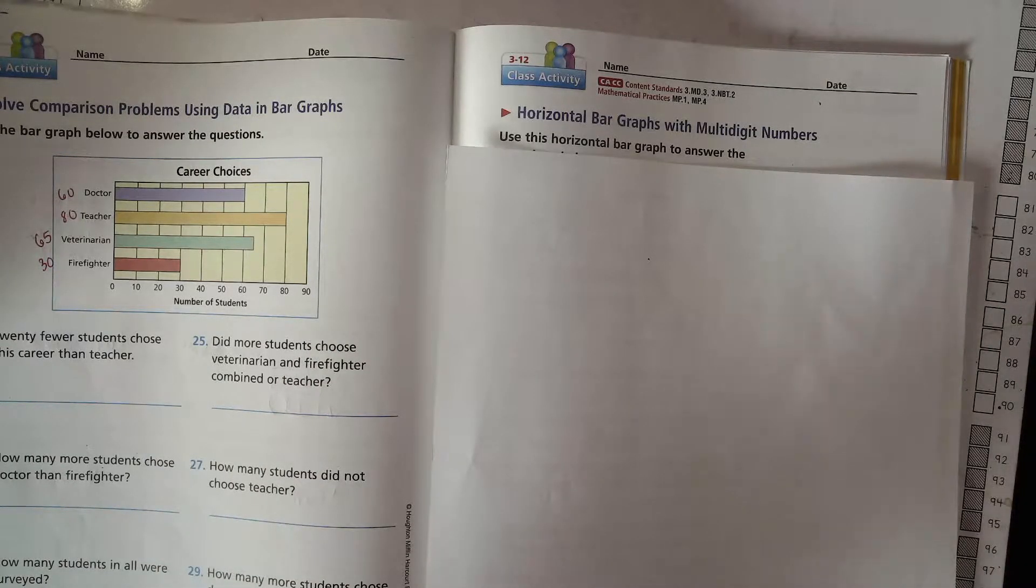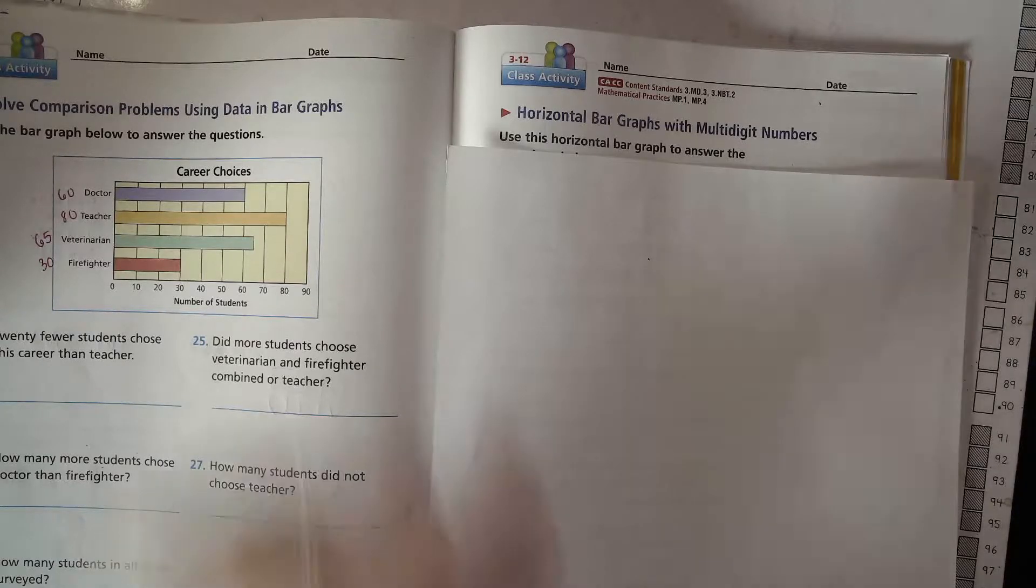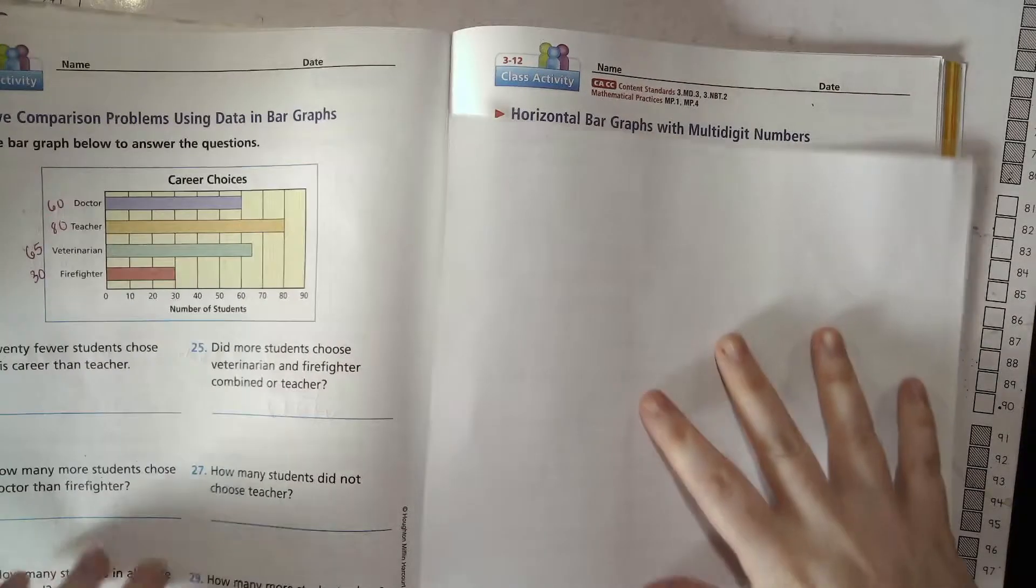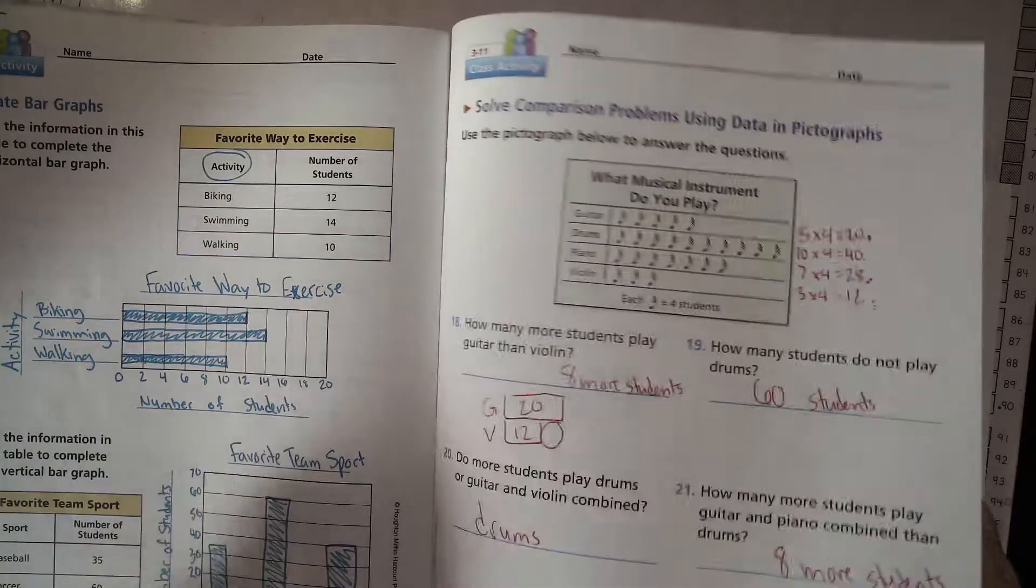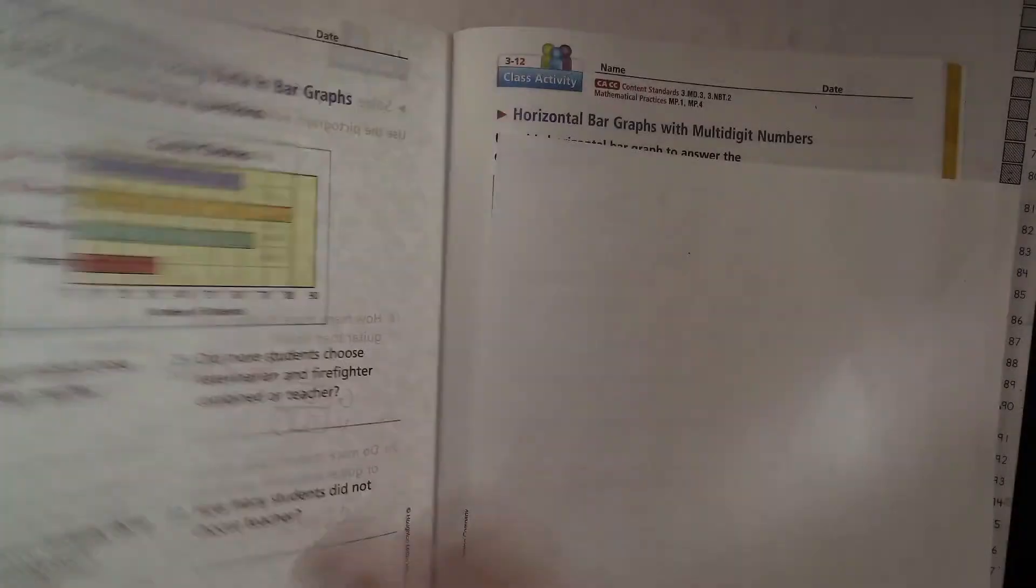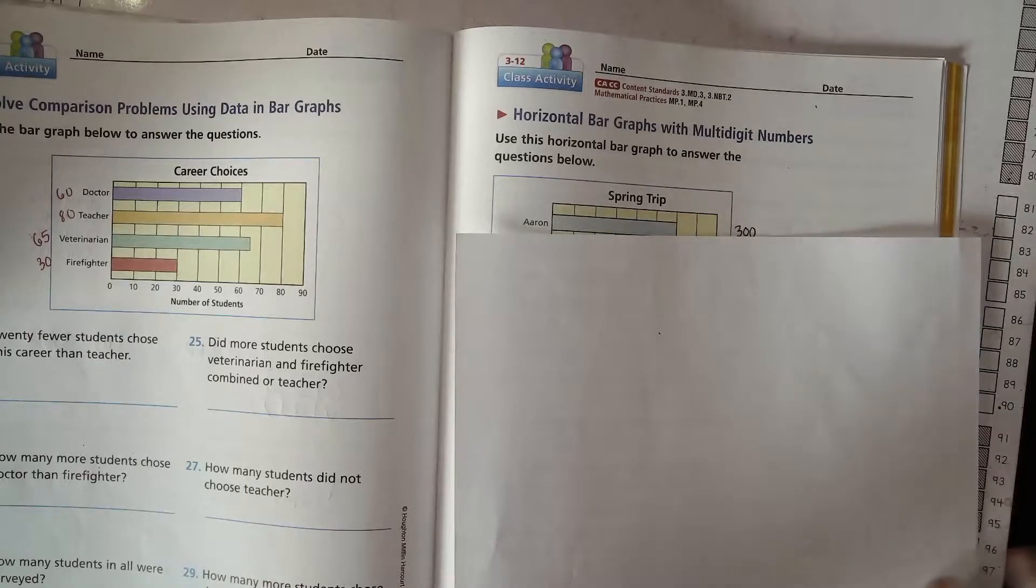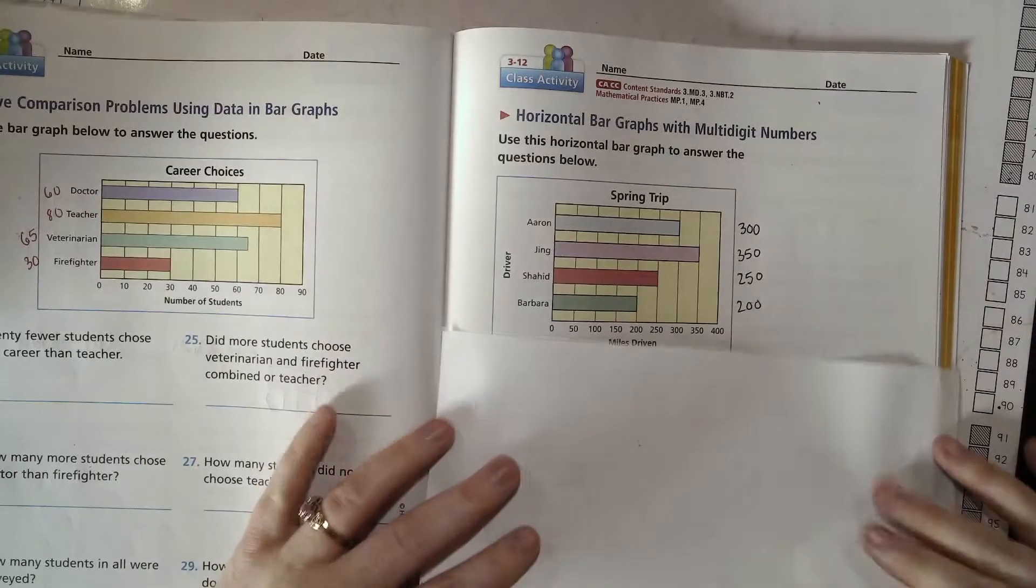So we're talking about horizontal bar graphs and vertical bar graphs with multi-digit numbers. It's really similar to what we did the other day with the bar graphs earlier, but now we're just dealing with bigger numbers.